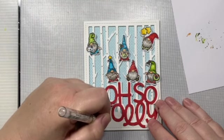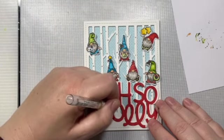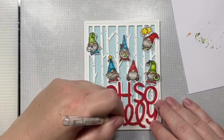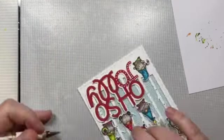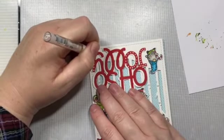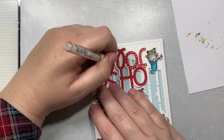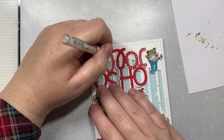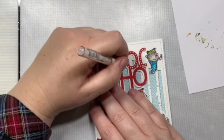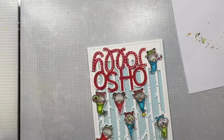And then we're going to add a little bit more decoration to our sentiment. I'm just going to add some little polka dots down the center of our Jolly. And I'm going to leave the Oh So alone. So just, we have a little bit of pop on the word Jolly there. And then that is going to finish off our design for the second Christmas gnomes card.